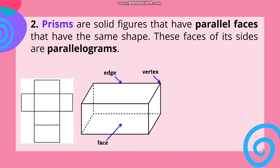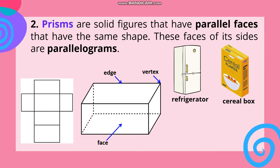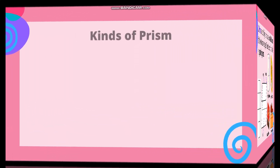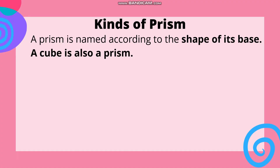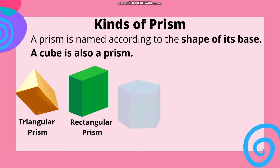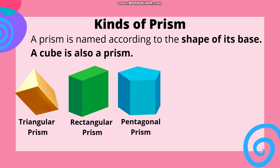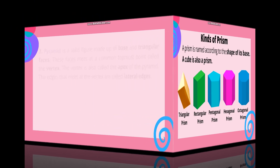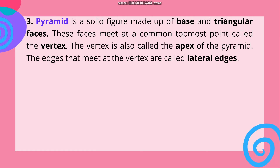Examples of prisms include cereal box, matchbox, and shoe box. Kinds of prism: A prism is named according to the shape of its base. A cube is also a prism. Ang pangalan o uri ng prism ay nakadepende sa shape ng base nito. Examples: triangular prism, rectangular prism, pentagonal prism, hexagonal prism, and octagonal prism.